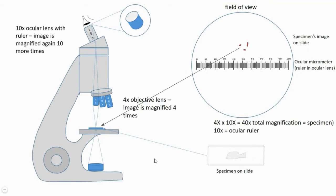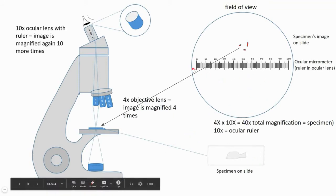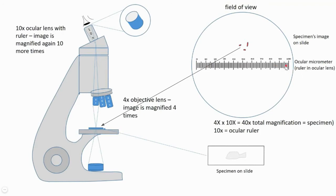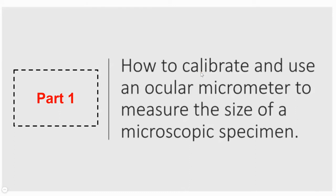You will notice that the ocular micrometer does not have any units. There are large divisions, medium-sized divisions, and the smallest divisions in between. Counting every gap gives a total of 100 divisions on this ocular micrometer. However, you do not know the length of this scale — that is why we say it is uncalibrated: you only know the number of divisions but not the actual length of the scale.